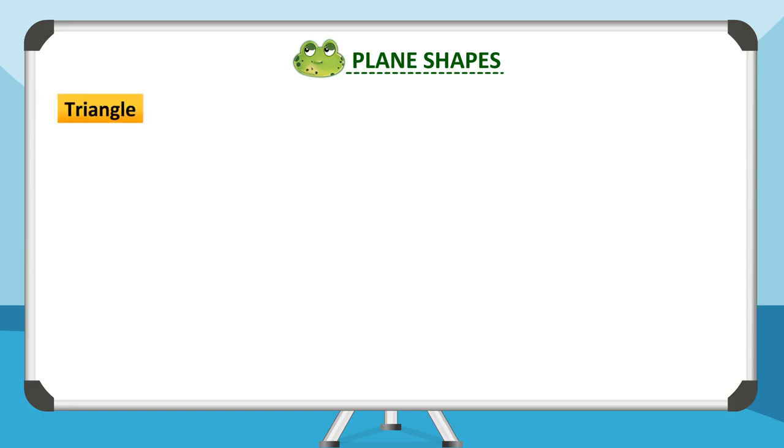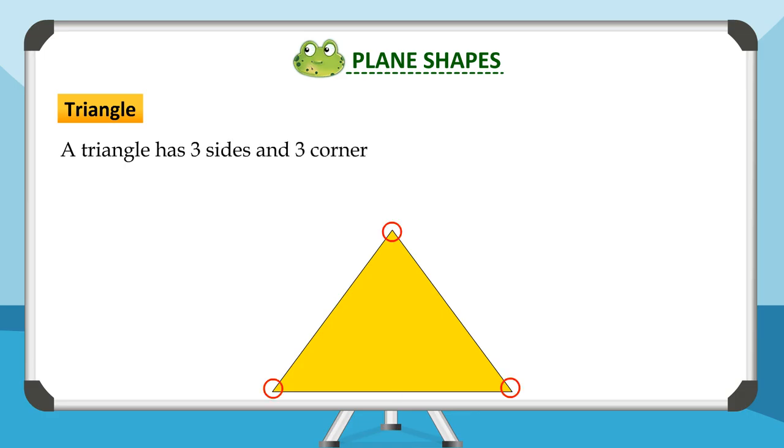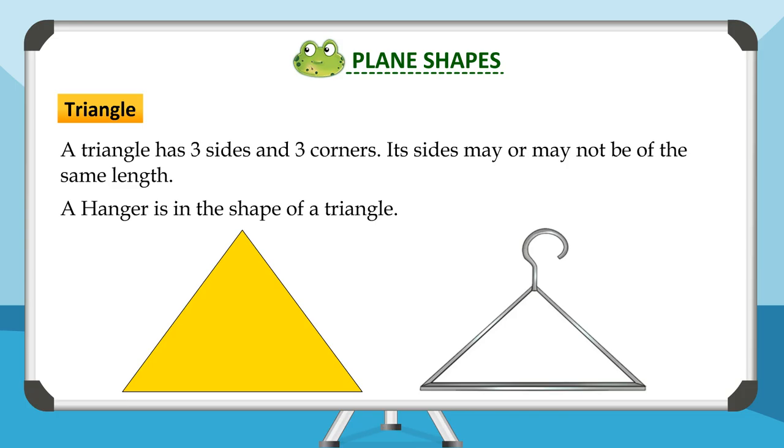A triangle has three sides and three corners. Its sides may or may not be of the same length. A hanger is in the shape of a triangle.